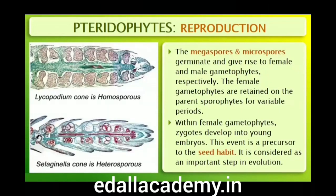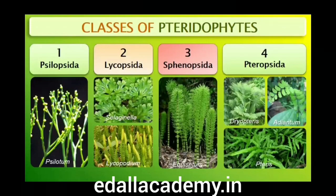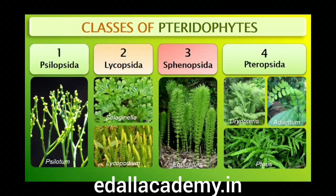The megaspores and microspores germinate and give rise to female and male gametophytes respectively. The female gametophytes in these plants are retained on the parent sporophytes for variable periods. The development of the zygote into young embryos takes place within the female gametophyte — this event is a precursor to the seed habit, considered an important step in evolution. Pteridophytes are further classified into four classes: Psilopsida (e.g., Psilotum), Lycopsida (e.g., Selaginella, Lycopodium), Sphenopsida (e.g., Equisetum), and Pteropsida (e.g., Dryopteris, Pteris, Adiantum).